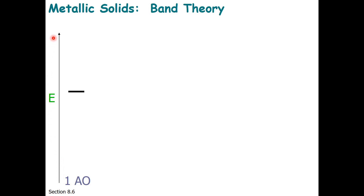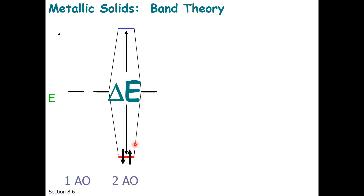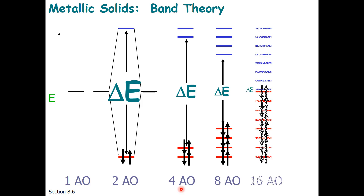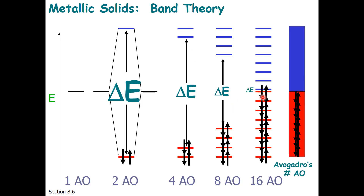If we start with the valence energy level of one atomic orbital, it may be at a particular energy. When two atoms get together, we'll get a bonding orbital full of electrons and antibonding orbitals that do not have electrons. We can continue with 4 atoms, 8 atoms, 16 atoms, and the band gap between the valence electrons and the empty orbitals is shrinking as we add atoms. So if we have Avogadro's number of atoms, we get a band of orbitals full of electrons and a continuous band of empty orbitals — hence the name band theory.